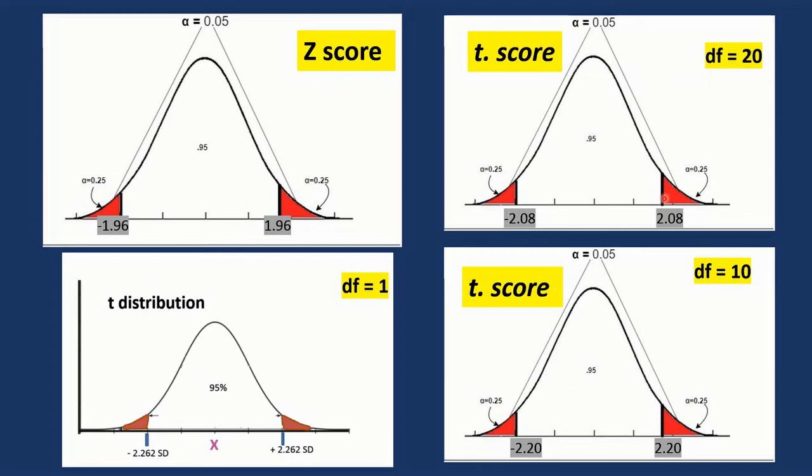So we know exactly how much we should add, how many standard deviations should add to reach the area 95%.